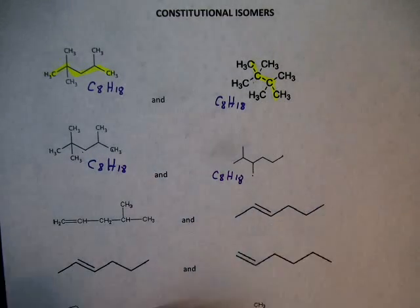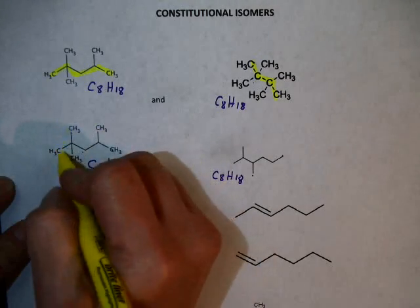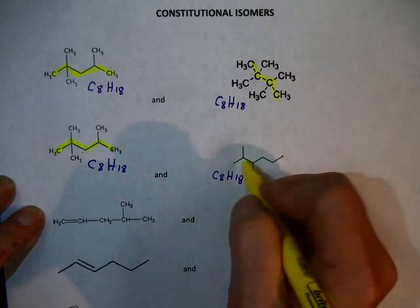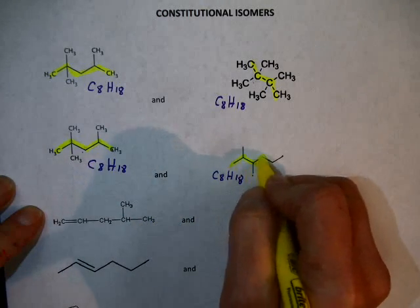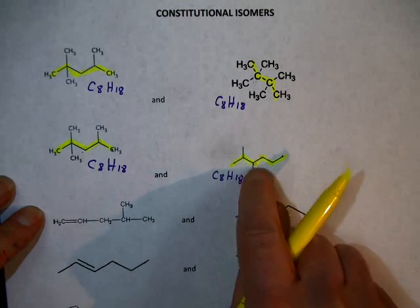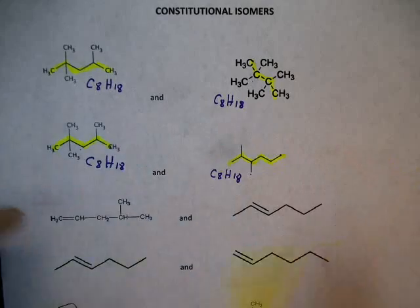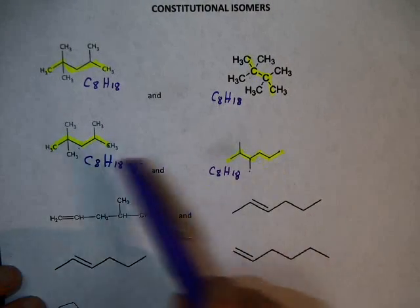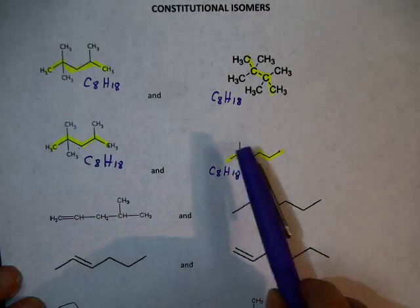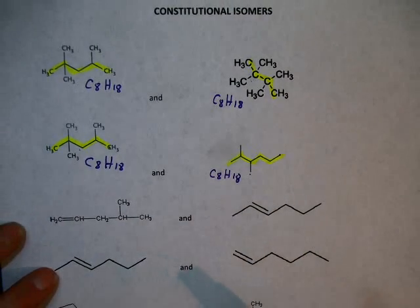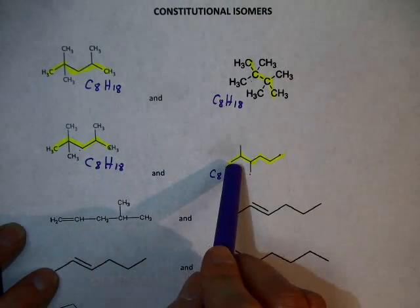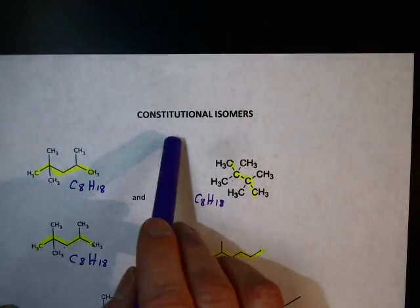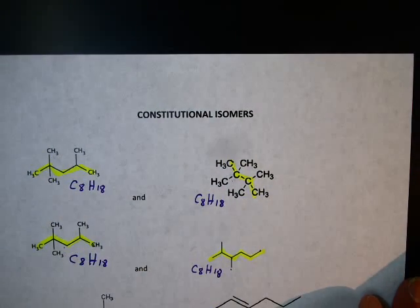How do these two compounds compare? The longest continuous chain here is 5, while the other has a longest chain of 6. So even though they have the same formula, the order of bonding is different — the way the atoms are connected is different. These are constitutional isomers. All the examples on this page are examples of constitutional isomers.